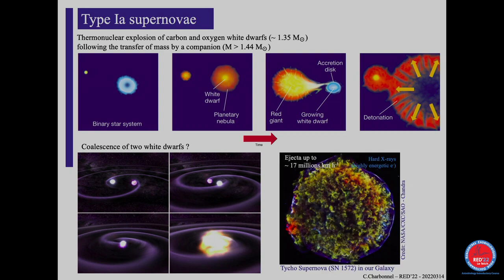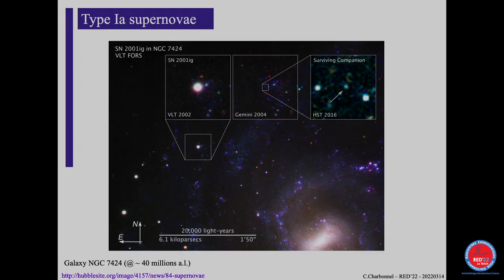When you have accretion, this white dwarf's mass is going to increase, and at a certain mass called the Chandrasekhar mass, you will have a detonation — a supernova. This is called a Type Ia supernova. This can also happen if you have two white dwarfs that merge. This makes beautiful objects where you have ejecta going at very high speed with a lot of hard X-rays. Some people try to look for the companion, and in one example the companion was found a few years later, proving it was really a Type Ia supernova.